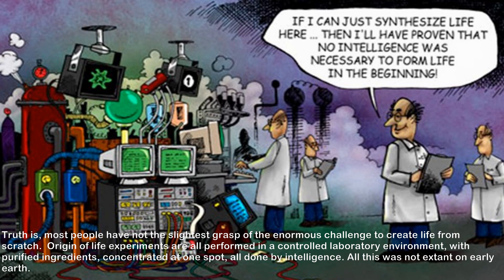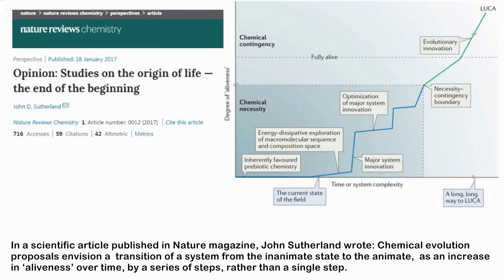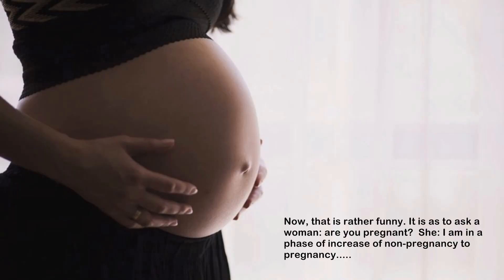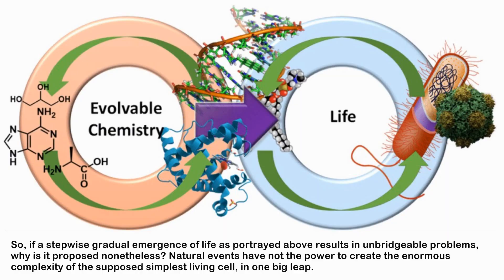The truth is most people have not the slightest grasp of the enormous challenge to create life from scratch. Origin of life experiments are all performed in a controlled laboratory environment, with purified ingredients concentrated at one spot, all done by intelligence — none of this was present on early Earth. In a scientific article published in Nature, John Sutherland wrote that chemical evolution proposals envision a transition from inanimate to animate state as an increase in aliveness over time by a series of steps rather than a single step.